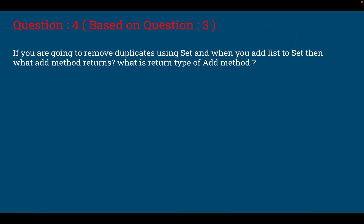The fourth question which interviewer asked was based on question 3. If you are going to remove the duplicates using Set, and when you add the list to Set, then what does the add method return? What is the return type of add method? So the answer is: the add method inserts a new value in the set and has a return type as boolean. So the answer is boolean.